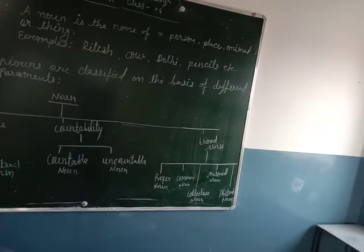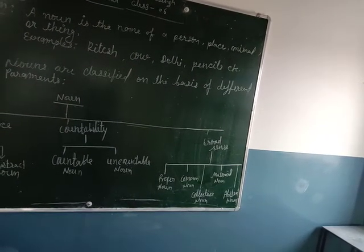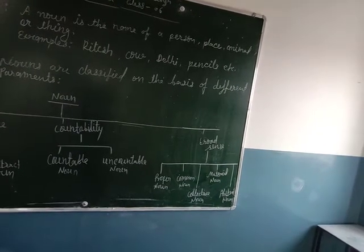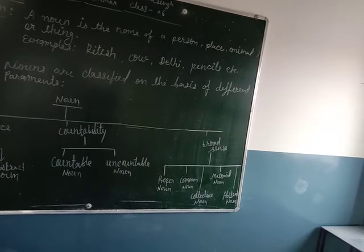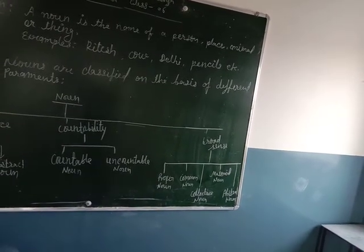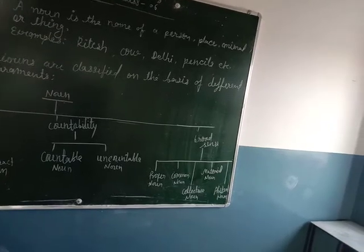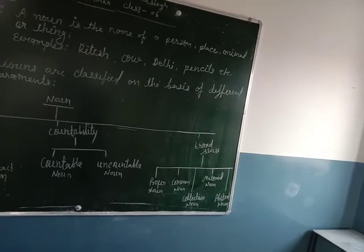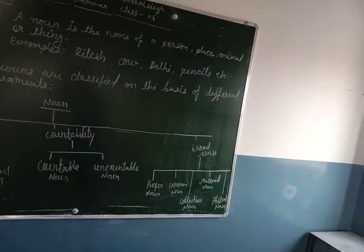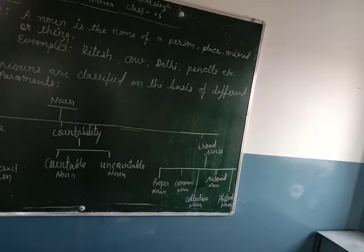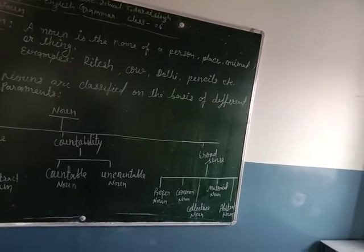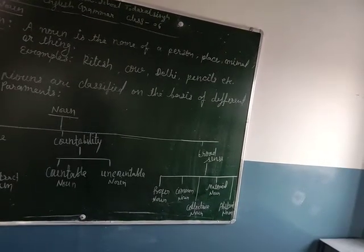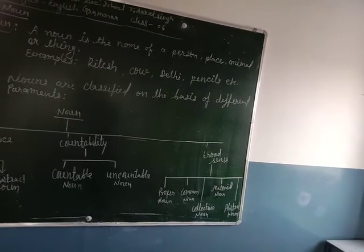Next, material noun: it is the name of materials or substances which are uncountable. For example: milk, gold, water, sugar, etc. And next, abstract noun: it is the name of such things which have no physical existence. For example: happiness, fear, fatigue, flight, etc.